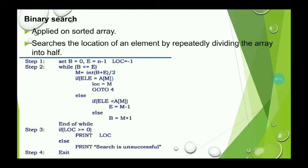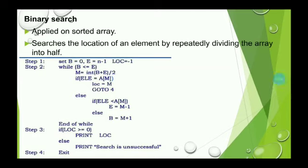Whenever the middle element is calculated, all elements lesser than the middle element are present to its left, whereas all elements greater than the middle element are present to its right — because the array is already sorted. Hence we can search for an element either in the left or right part of the array by changing the values of e and b respectively. This process of division continues until a match is found or the while loop condition becomes false. Then the value of loc is checked: if it is greater than or equal to 0, the search is successful and the location is printed; otherwise, the search is unsuccessful.